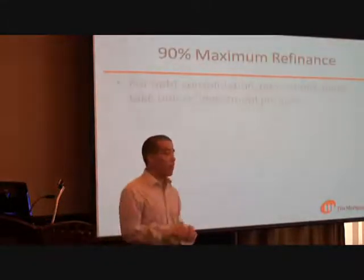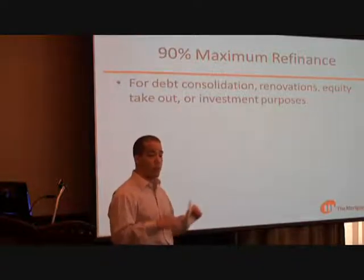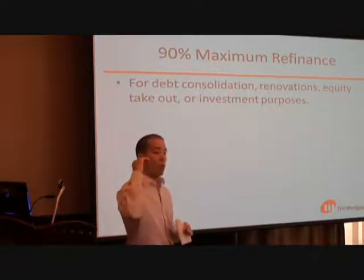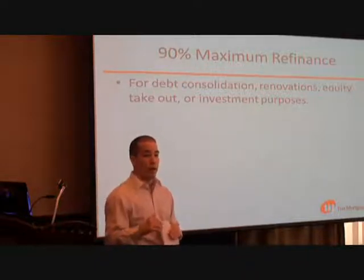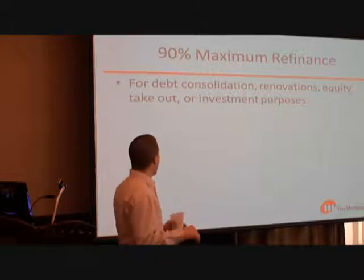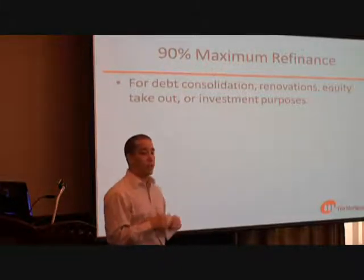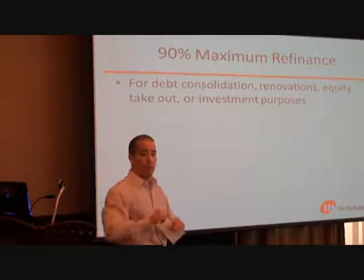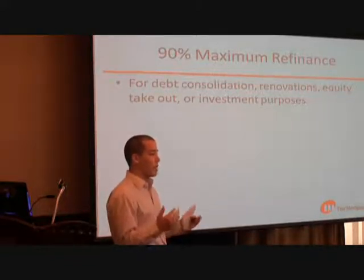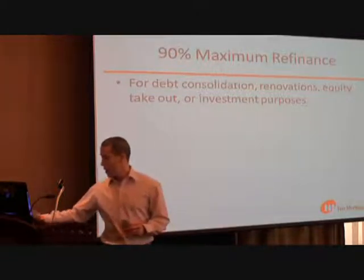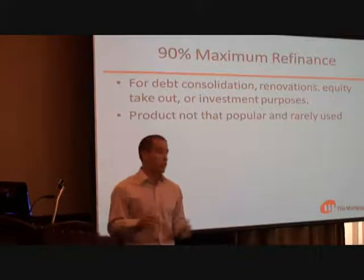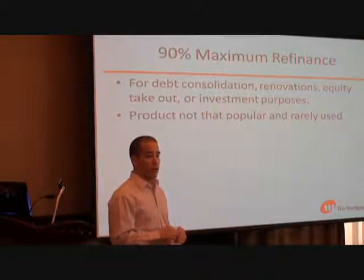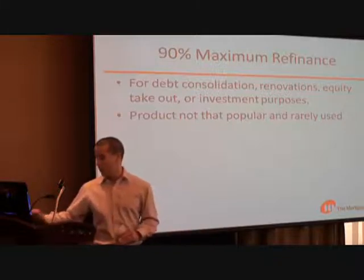The first change is the maximum refinance amount. The limit is now 90%. So if someone has a house and they want to take equity out, they can now only go to 90% of the property's value. Before, they could go up to 95%. This was put in place to address problems seen in the States, where rising property values led people to refinance every year without doing anything to the property — treating their house like a bank account. In Canada, this product was not really used — people were never really taking it up to the max 95% — so this is a change but probably something that won't affect most people.